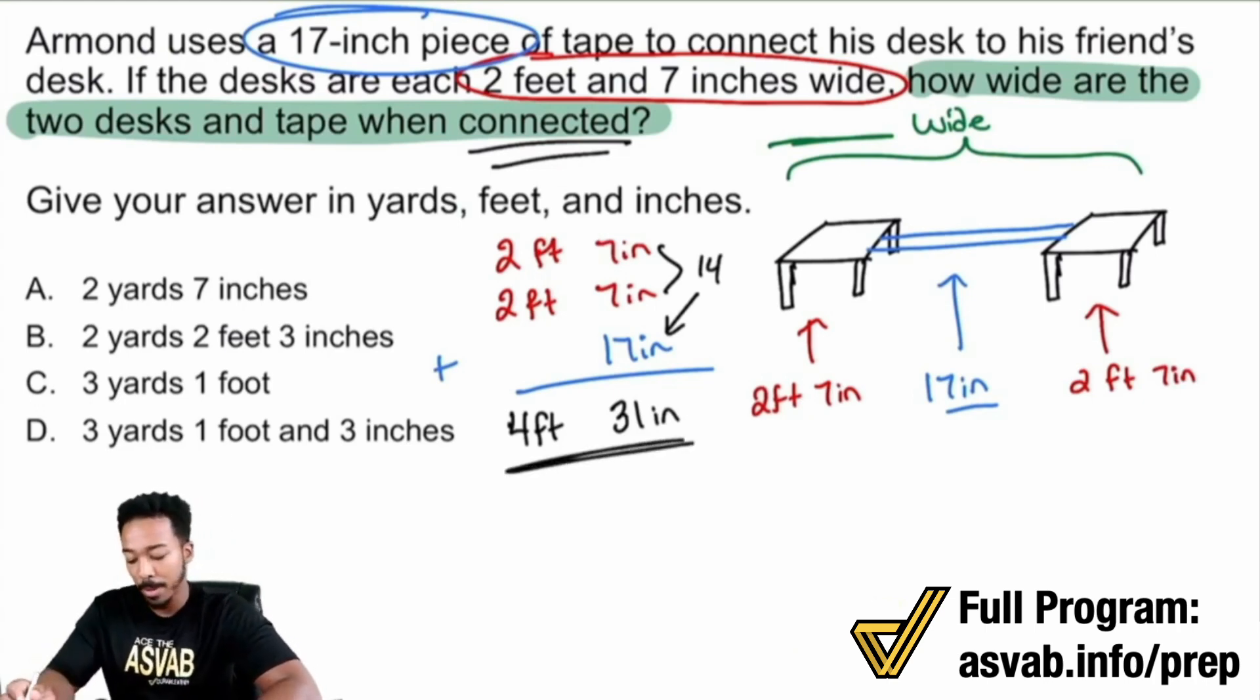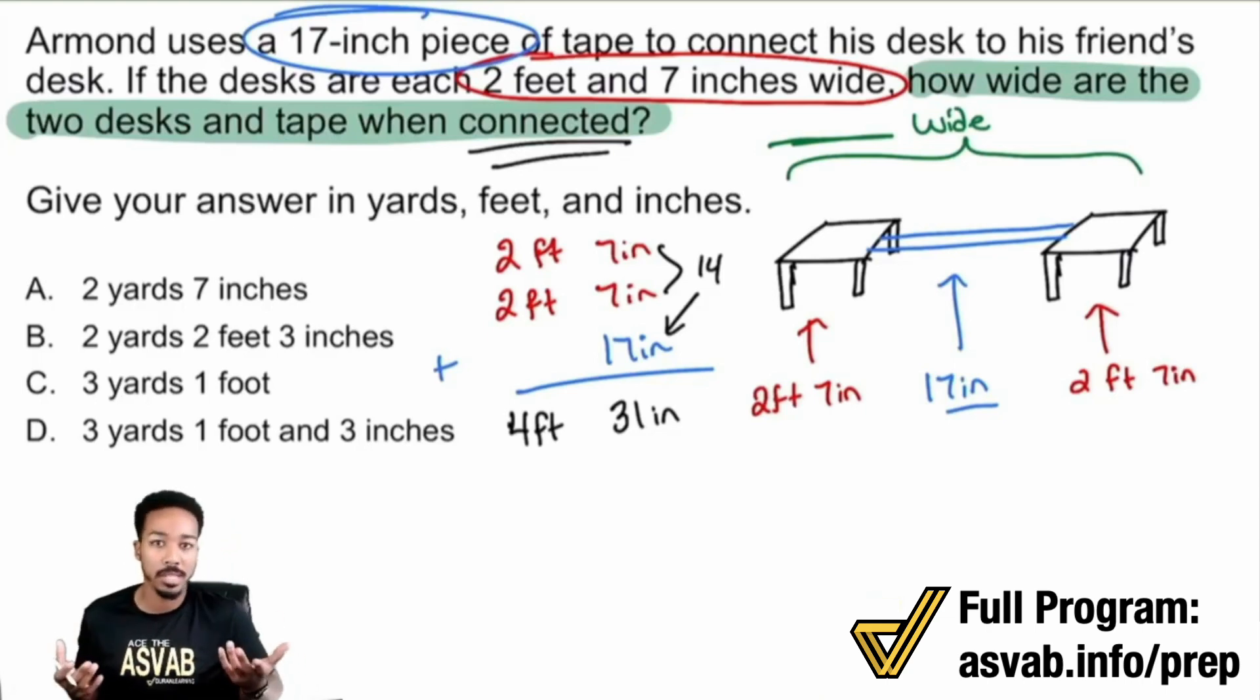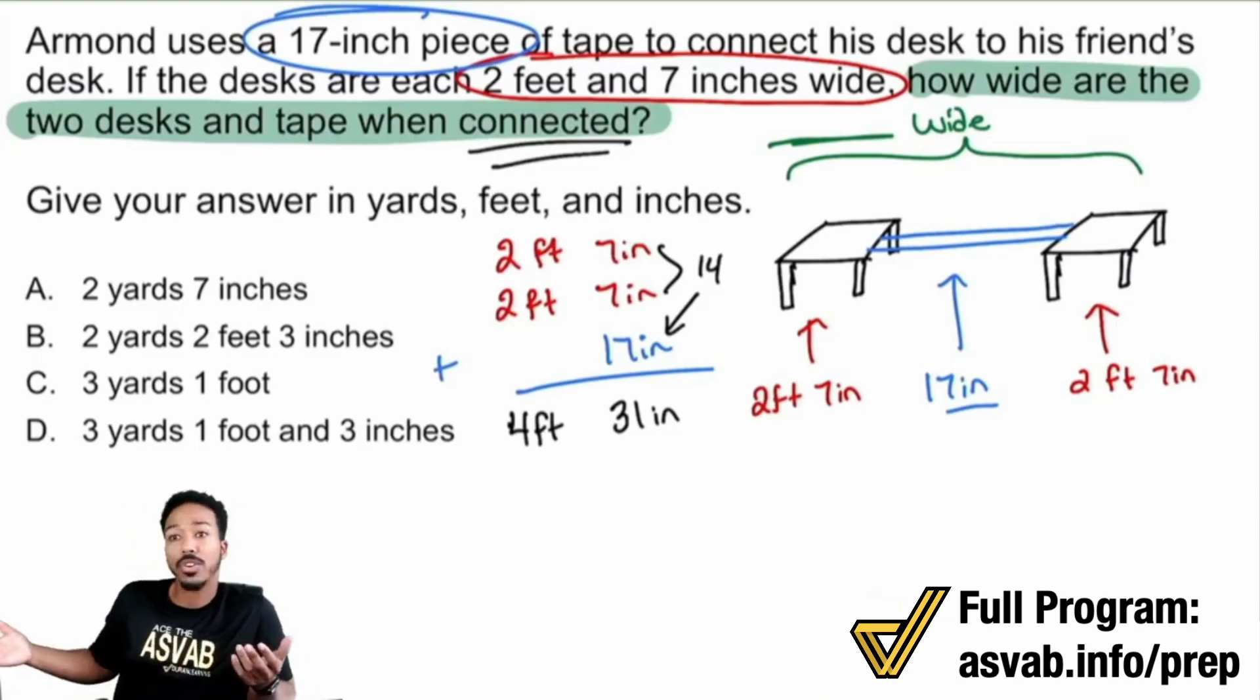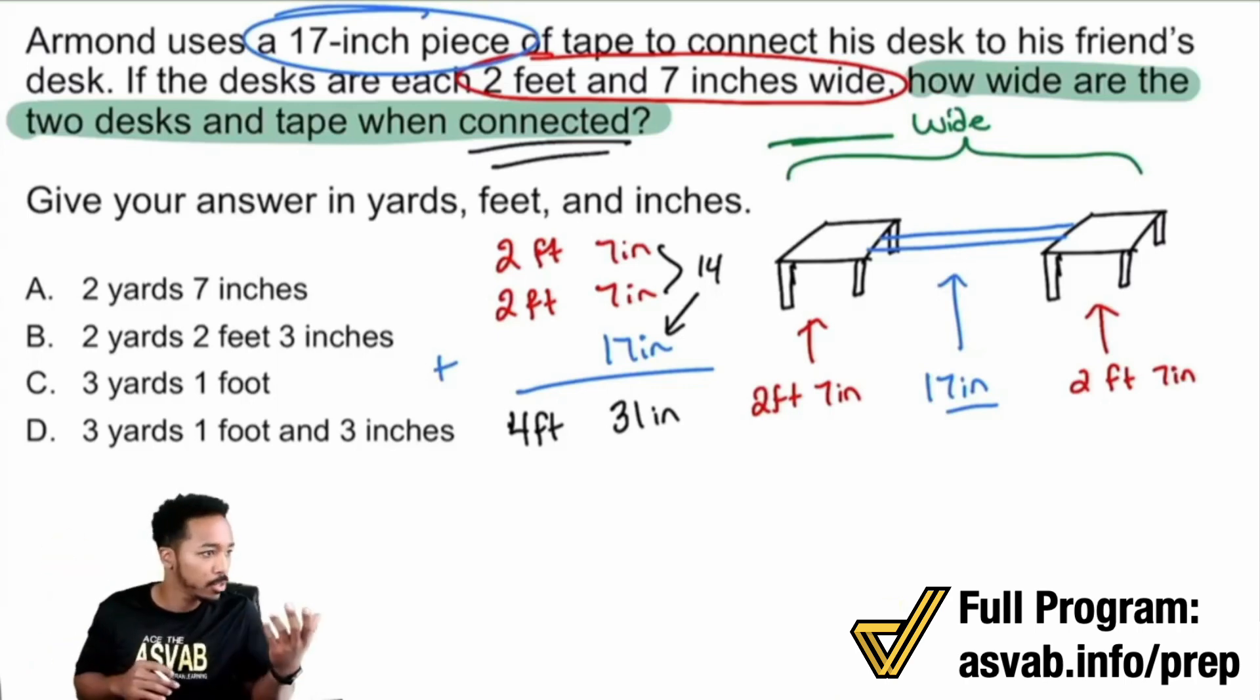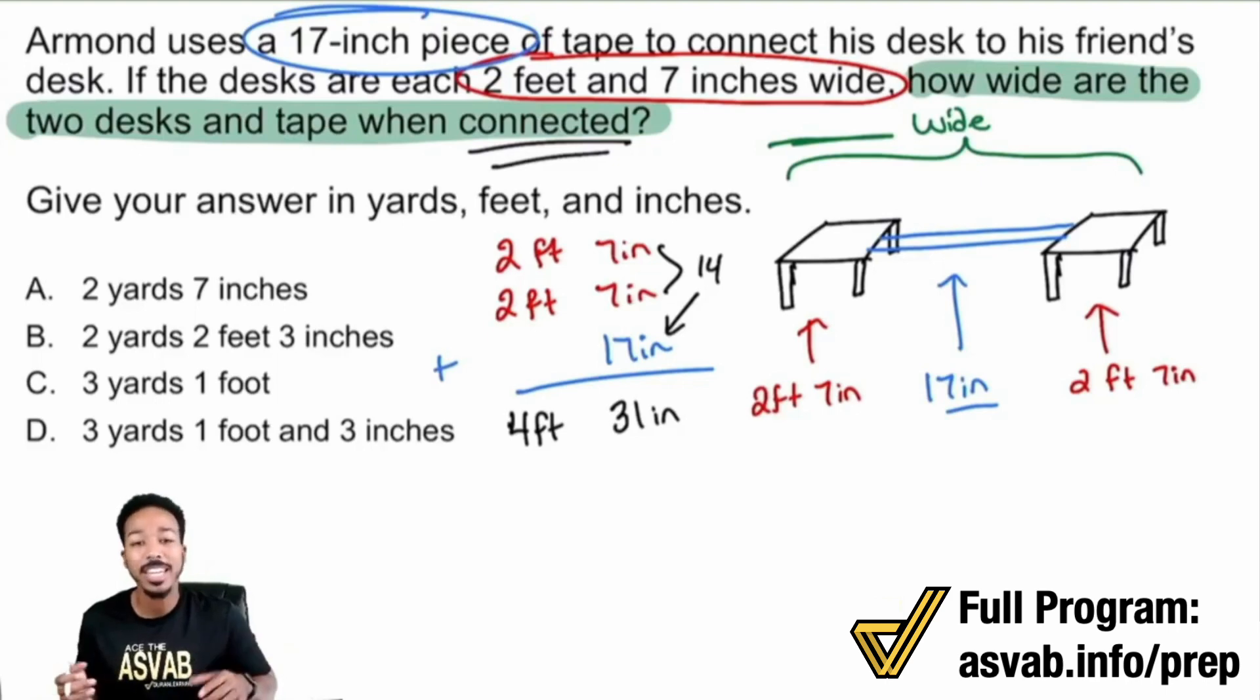First and foremost, I'll add two feet seven inches with two feet seven inches along with the 17 inches for the piece of tape. Adding everything together, two feet plus two feet is four feet, and seven plus seven plus 17 is 31 inches. So right now we have four feet and 31 inches.